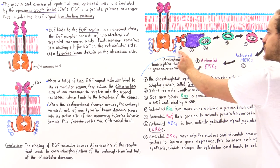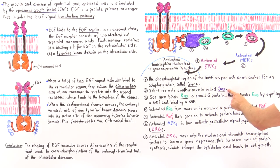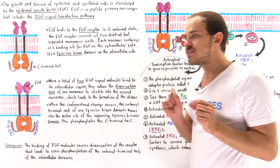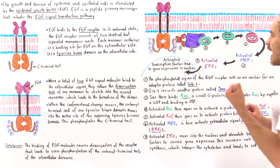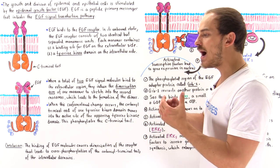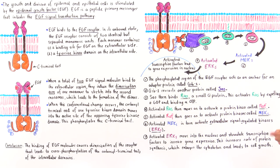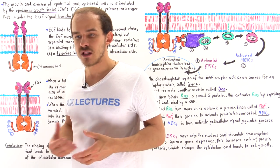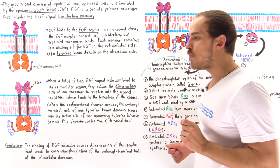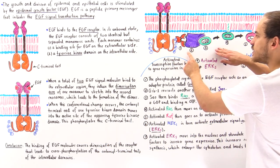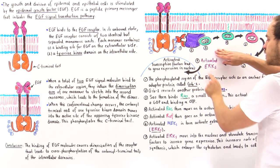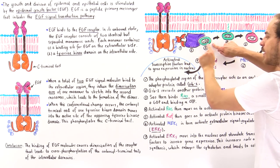In step two, GRB2 recruits another protein called SOS. SOS contains an active site that binds a small G protein called RAS. Just like the G proteins discussed in previous lectures, RAS in its inactive state binds GDP and in its active state binds GTP. Once SOS binds GRB2, it becomes activated and binds RAS.